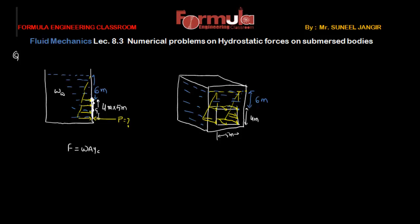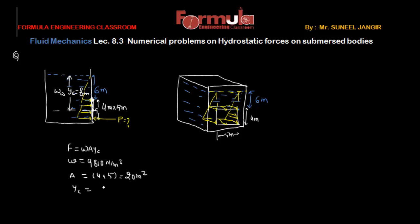The center of gravity is 2 meters from the hinge, so yc equals 6 plus 2 = 8 meters from the free surface. We know w = 9810 N/m³, area of the gate is 4×5 = 20 m², and yc = 8 meters.